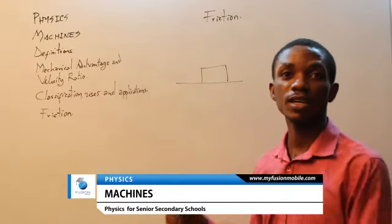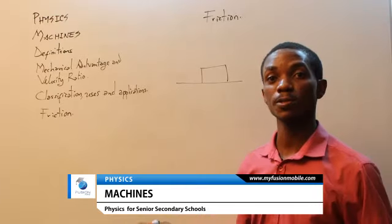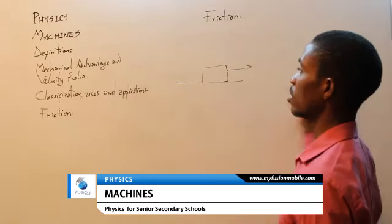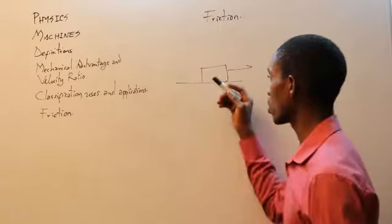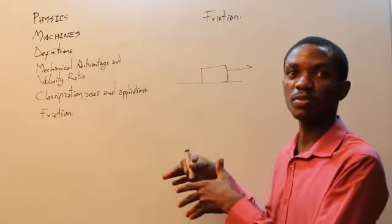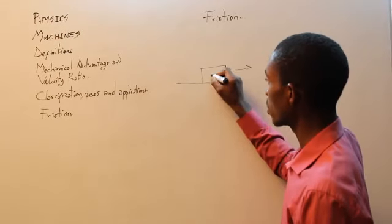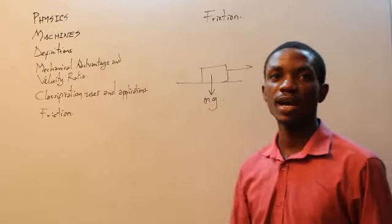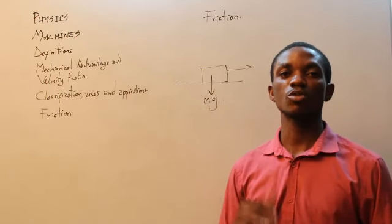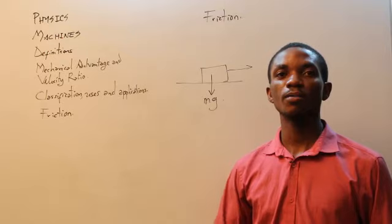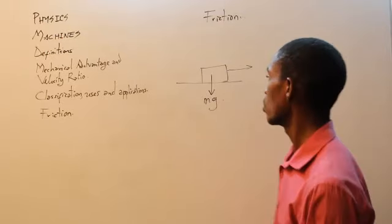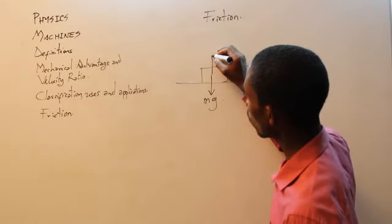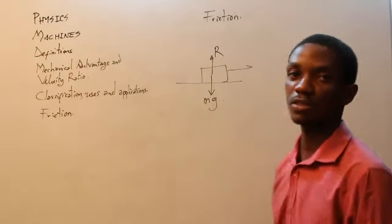Imagine a body — say a box of books — and someone wants to drag this box of books in one direction. As this box of books sits there, it has books, which means it has weight and mass. So the weight is acting downward — that is Mg. According to Newton's third law of motion, to every action there is an equal and opposite reaction. So to this action of Mg, there will be a reaction from the same point which is equal to it, and it is called R — the normal reaction.